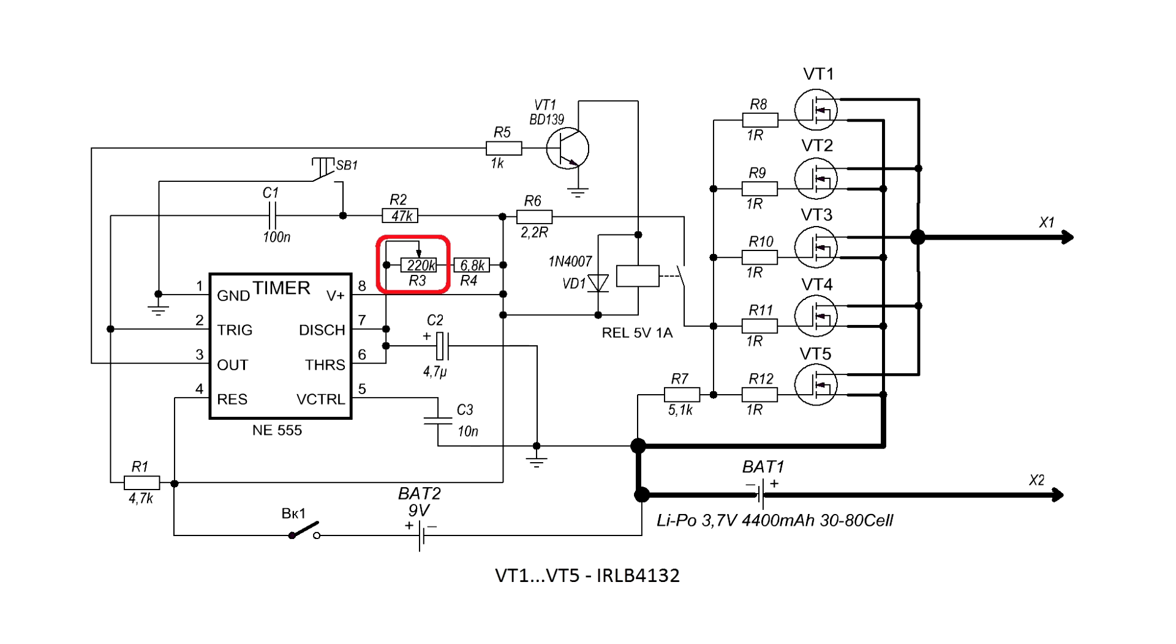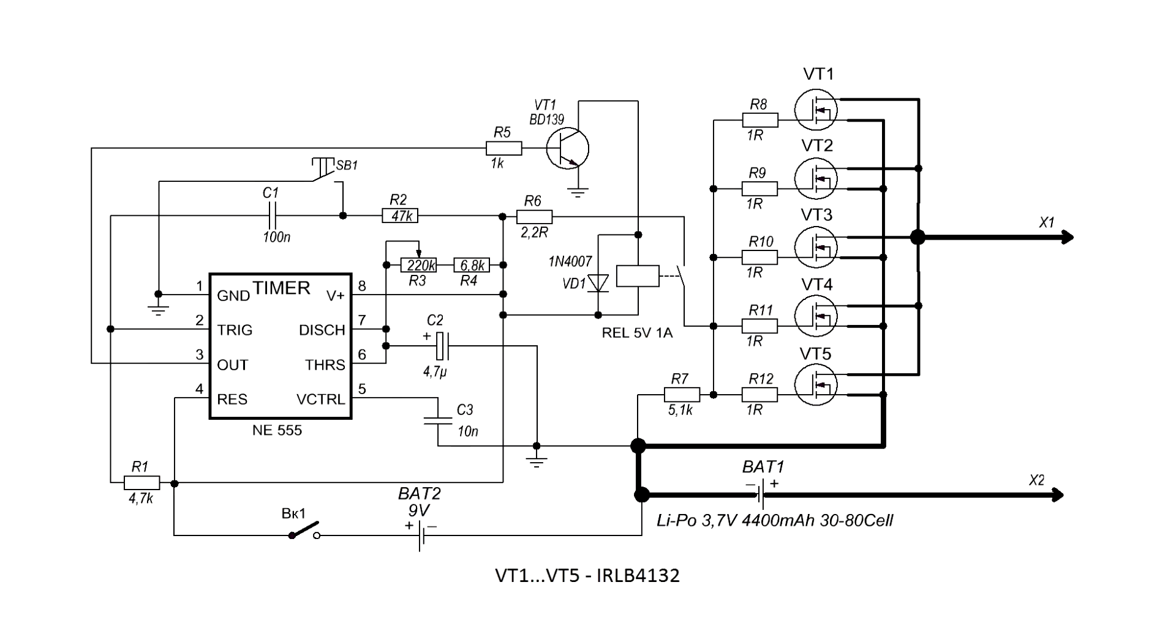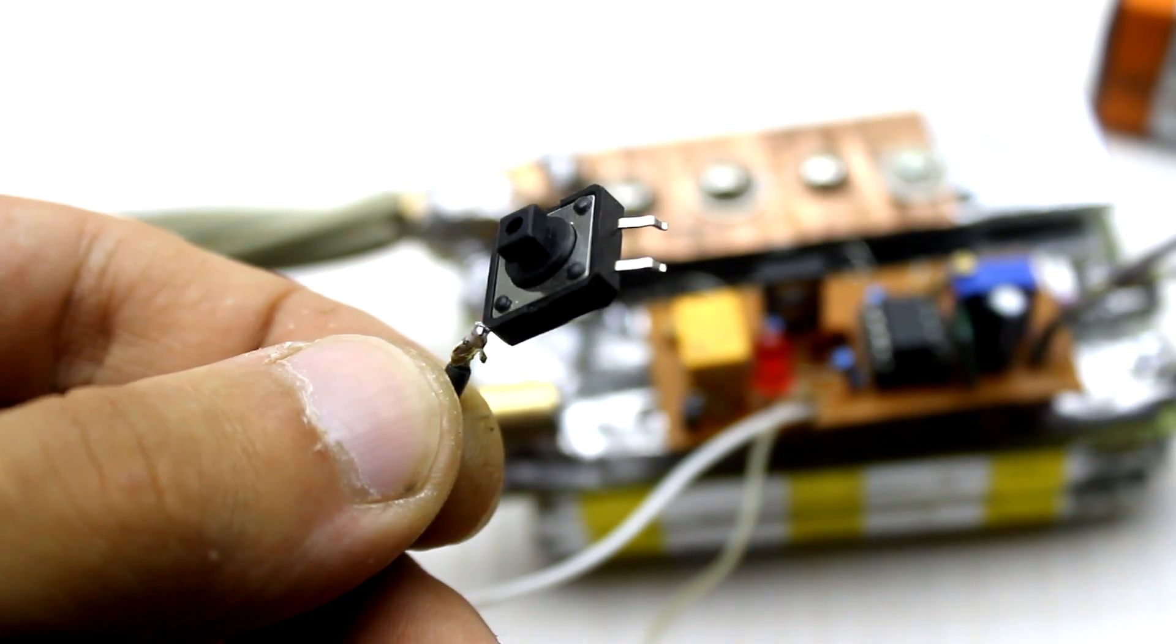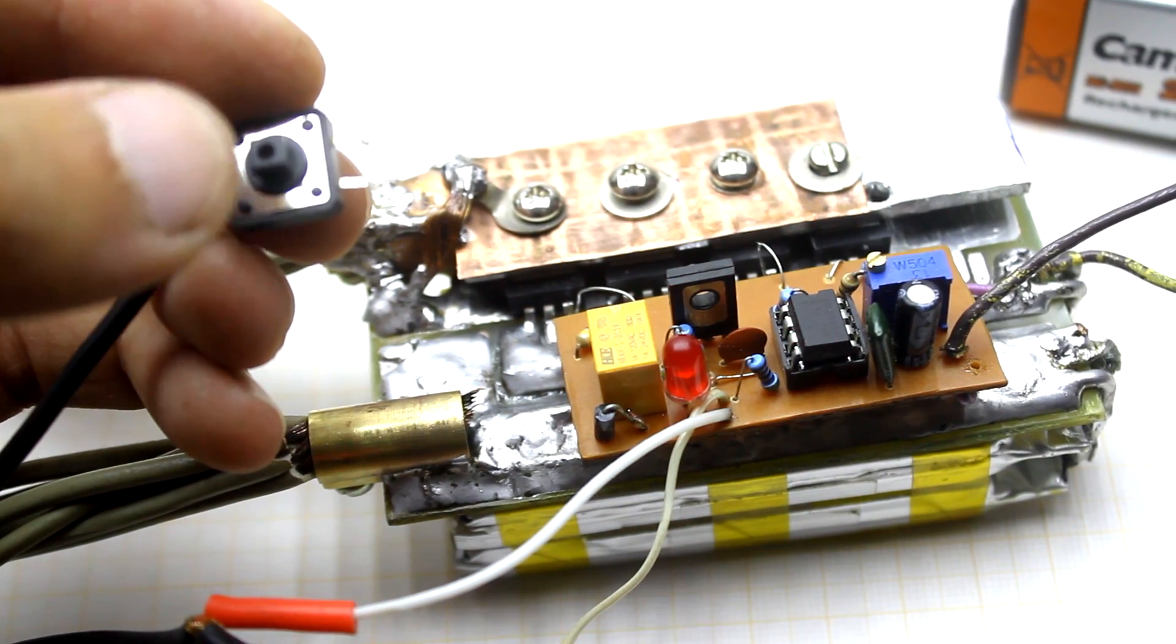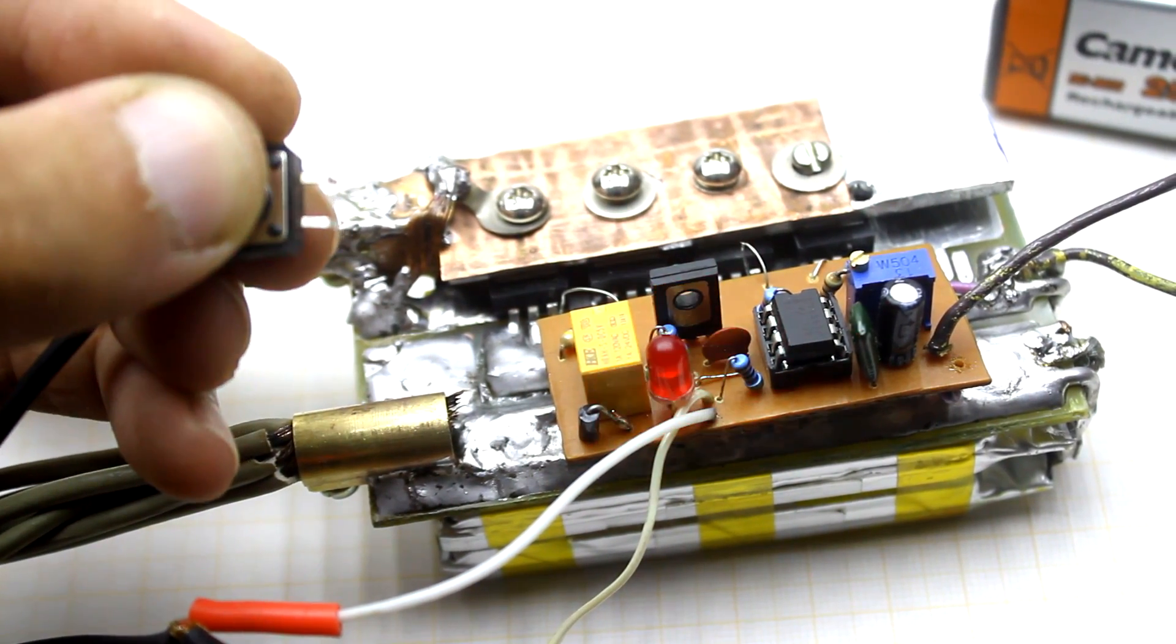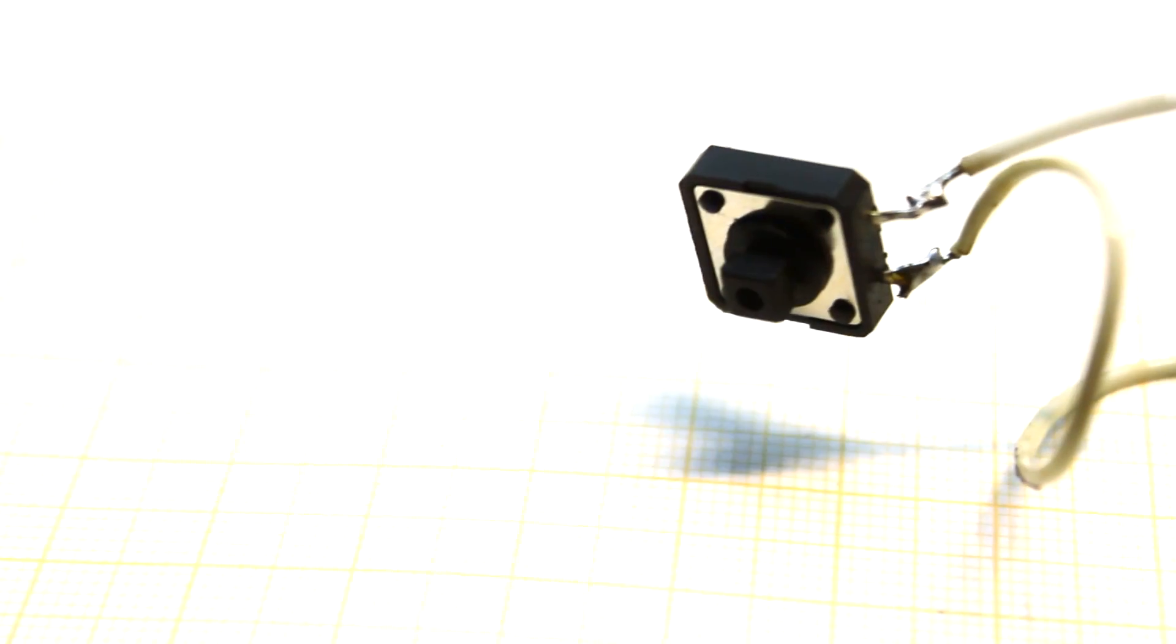The welding time can be set by rotating the trimmer. The circuit is interesting because when you press the button there is a clear time count. This time is strictly at the preset level and doesn't depend on what time you press the button and when you release it. You press the button, the pulse went and the circuit is turned off until the next press.